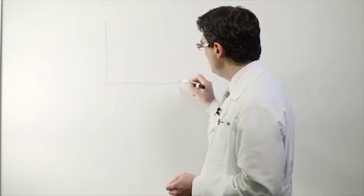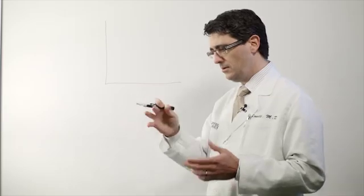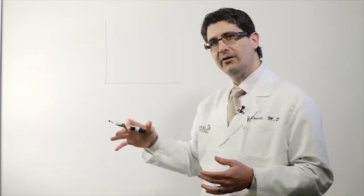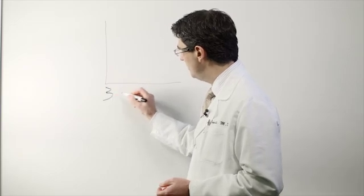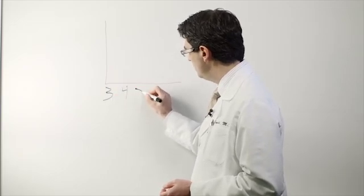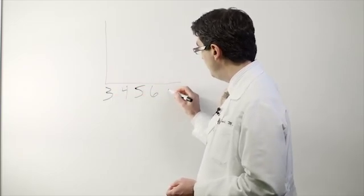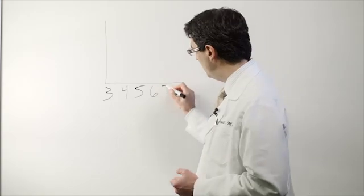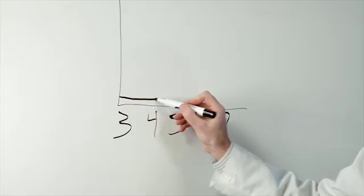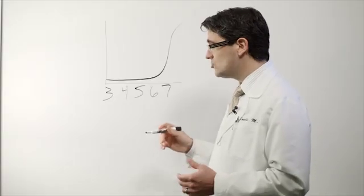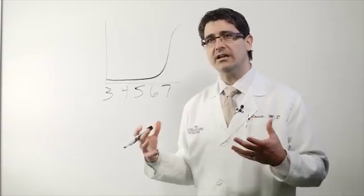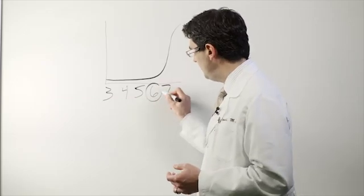Different than what we've seen with the ascending aorta where there was a hinge point in the curve at around 6 centimeters, the risk for having a complication related to an aneurysm of the descending aorta typically occurs out at 7 centimeters. And so the standard recommendation of when we operate on someone's descending aorta is 6 centimeters.